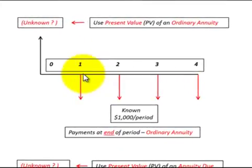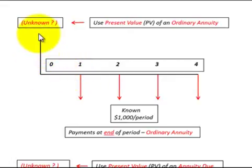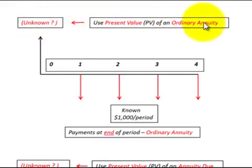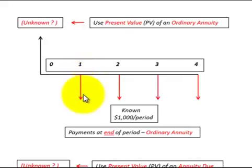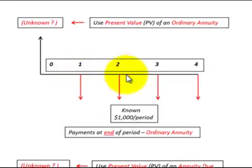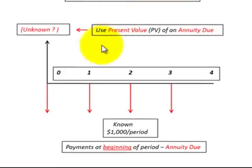In this cash flow diagram, we have four equal payments each at the end of each period, and we want to know what their present value is at the beginning — that's the unknown amount. In this case, we'd use the present value of an ordinary annuity. Your problem will usually refer to it as an ordinary annuity, meaning the payments are at the end of the period. Make sure in your calculator or whatever you use that you indicate payments are at the end of the period.